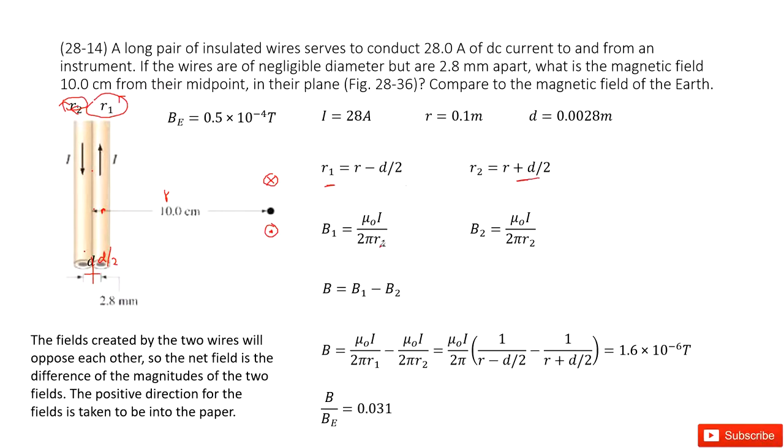Now you can see the net magnetic field is B1 minus B2 because of the opposite direction. And we input B1, B2 inside and then replace r1, r2 in these two terms. Now we can input all the given quantities to get the answer. So the first part is answered.